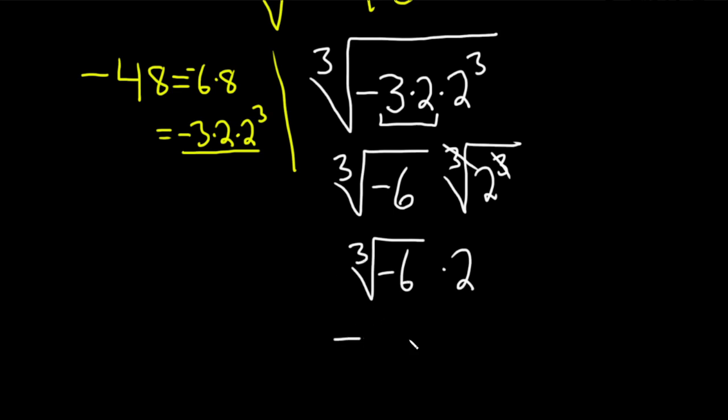Okay, so this is going to be negative cube root 6. Oops, I forgot to put the 2 in the front, so I'll do it over here. Negative 2, cube root 6. And so that would be the final answer in this problem.